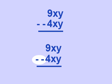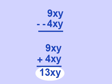For the bottom, whenever you have two negative signs side by side, it makes a positive. So we have to rewrite this as plus 4xy. And now let's solve the problem. 9xy plus 4xy equals 13xy. And that's our answer.